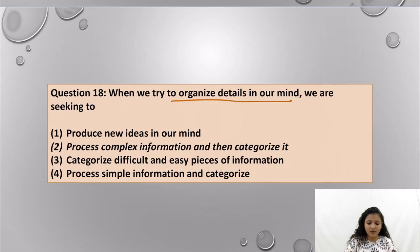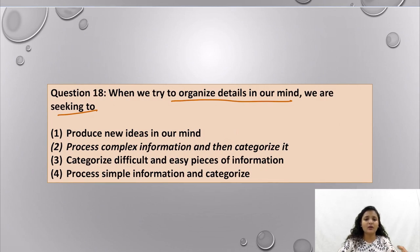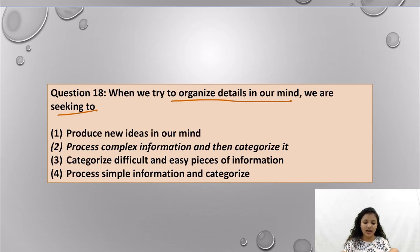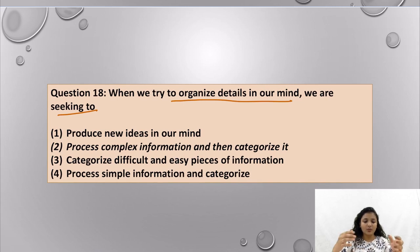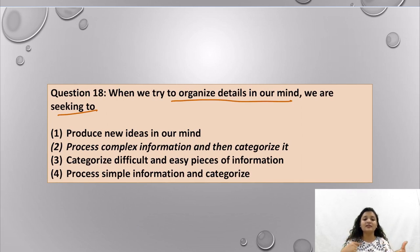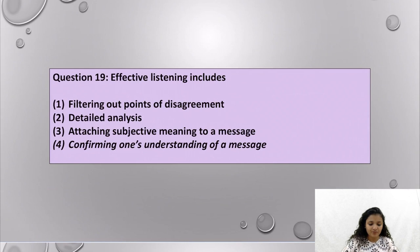Question 18: When we try to organize details in our mind, we are seeking to do what? When we organize details in our mind, we have complex structured ideas. We then categorize them — easiest, difficult, or most difficult — and plan accordingly. We simplify complex information running in our head for easier understanding. So option number 2 is the correct answer.